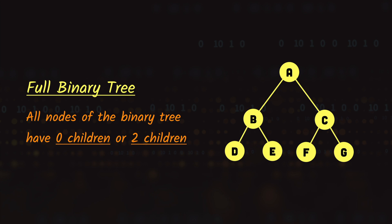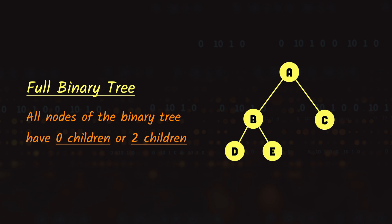Let's say that we remove the node G. Now the tree will no longer be a full binary tree, because the condition of having either zero or two children is not being fulfilled — node C now has one child. But if we remove node F as well, it will become a full binary tree again, because C is then a leaf node with zero children.